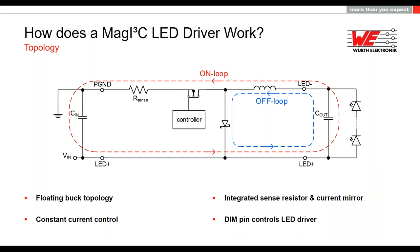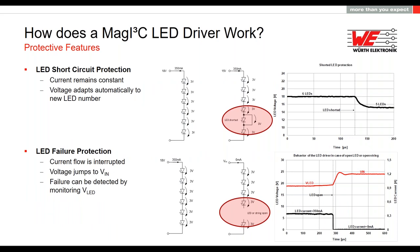The LED driver can be controlled directly via the DIM pin — it switches on or off depending on the applied signal. The LED driver also has LED protection features. With short circuit protection, the current remains constant at the set value even if an LED has a short circuit. The voltage across the LEDs decreases automatically within 50 microseconds. In our example with six LEDs at 3 volts and 350 milliamps and 18 volt input, if one LED is a short circuit, five LEDs at 18 volts could be damaged. With our LED driver, the voltage is therefore reduced to 15 volts. There is also integrated failure protection: if the current flow through the LED is interrupted, the LED driver switches off and the voltage at the LED+ pin jumps to VIN, allowing failures to be detected by monitoring the LED voltage.